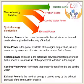Indicated power is the power developed in the cylinder of an internal combustion engine by the burning of the fuel. Brake power is the power available at the engine output shaft, usually measured by some sort of brake, hence the name brake power.